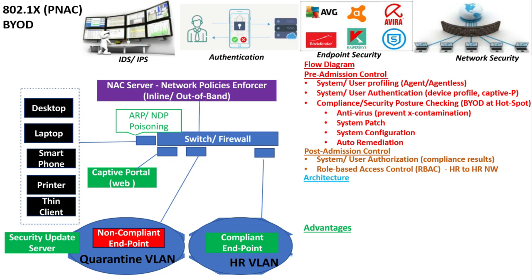In post-admission control, after the non-compliant endpoint is made compliant by installing necessary configurations, post-admission controls are implemented. Based upon the device profile or user profile, the user is granted access to certain network resources. For example, if the user is part of the HR department, they are granted access to only the HR VLAN based upon the compliance result. This is a form of role-based access control, in which access to resources is determined by the user's role.